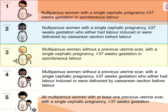Group three is almost similar to group one but differs in parity. While group one includes nulliparous women, group three includes multiparous women without a previous uterine scar with a single cephalic pregnancy of more than 37 weeks in spontaneous labor. In the picture you can see this woman has had a baby before this pregnancy, so she is multiparous.